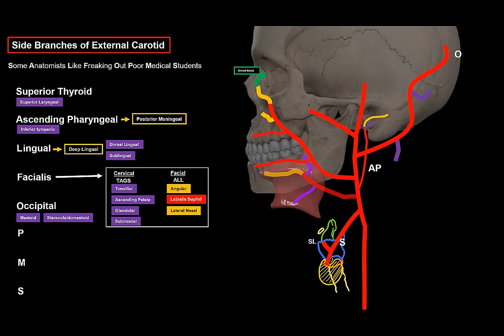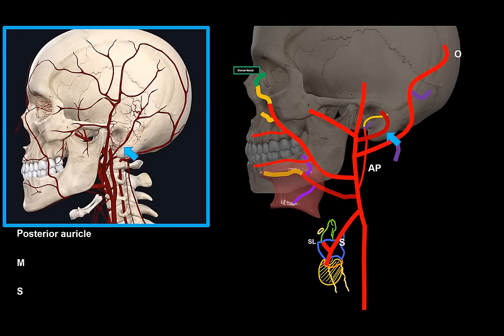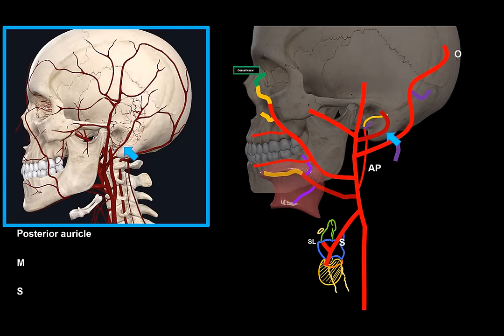The other posterior branch of the external carotid is the posterior auricular artery. It travels towards the backside of the auricle and terminates as the auricular branch, supplying the scalp behind the ear and the external ear. It also gives off the stylomastoid artery, which enters the stylomastoid foramen and supplies structures including the tympanic cavity, the antrum, the mastoid cells, and the semicircular canals — so it supplies the middle ear and parts of the internal ear.